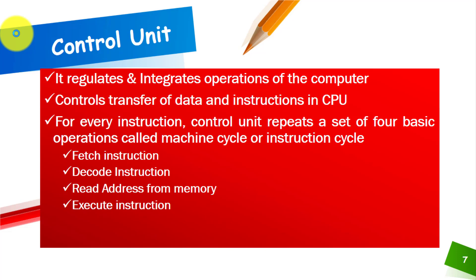For each instruction, the control unit repeats a set of four basic operations called the machine cycle or instruction cycle. This cycle includes: fetch the instruction, decode the instruction, read the address from memory, and then execute the instruction. These four basic operations are performed by the control unit.